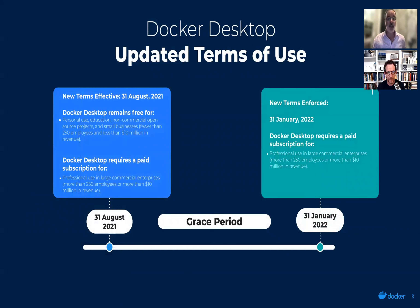We've recently updated our licensing terms for Docker Desktop. Previously provided for free, we now require users within commercial organizations with more than 250 employees or more than $10 million in revenue to be under one of our paid subscription tiers. These new terms officially take effect on January 31st.